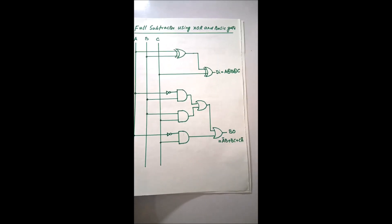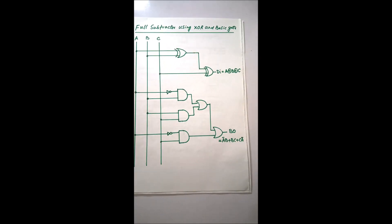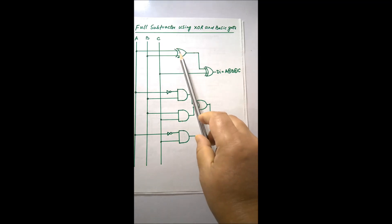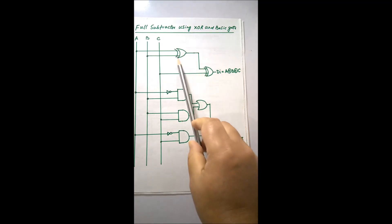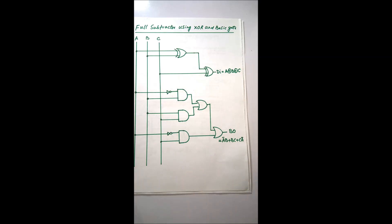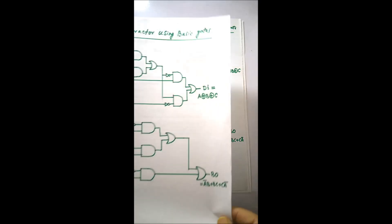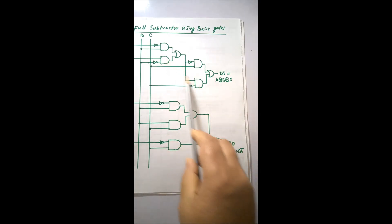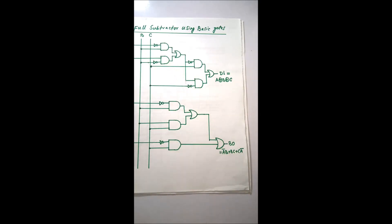We are showing this relationship in the circuit diagram. We will be implementing it in the lab using only basic gates. Therefore, the XOR gate will be replaced with basic gates, and I am showing here the diagram with only basic gates that we will implement in the lab. Let us come to the lab.